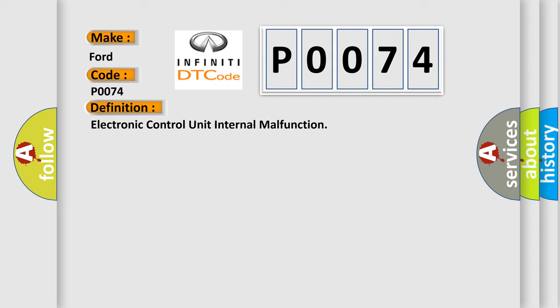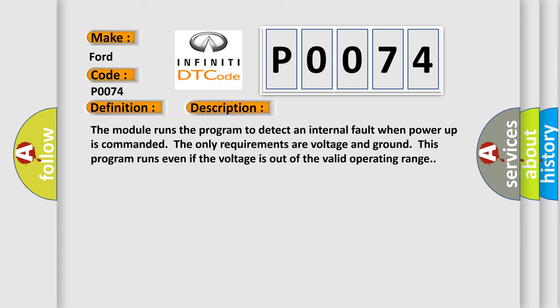And now this is a short description of this DTC code. The module runs the program to detect an internal fault when power-up is commanded. The only requirements are voltage and ground. This program runs even if the voltage is out of the valid operating range.